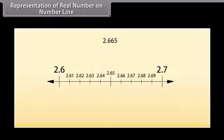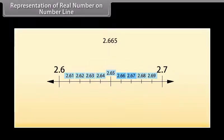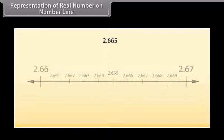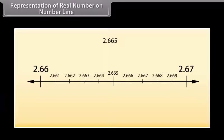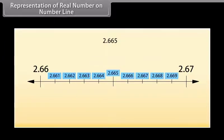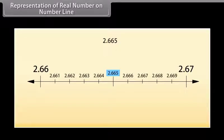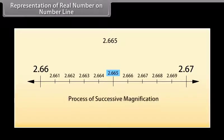Now focus on the portion between 2.6 and 2.7. Divide this again into 10 equal parts. The first part represents 2.61, the next 2.62 and so on. Again, 2.665 lies between 2.66 and 2.67. Focus on this portion and imagine dividing it into 10 equal parts. The first part represents 2.661, the second 2.662 and so on. 2.665 is the fifth mark in these subdivisions. This process is called successive magnification.